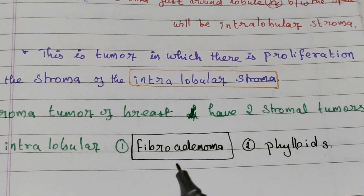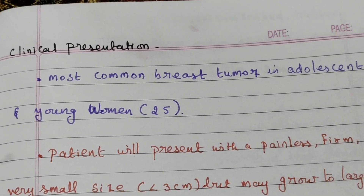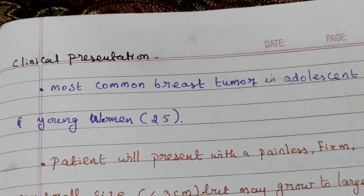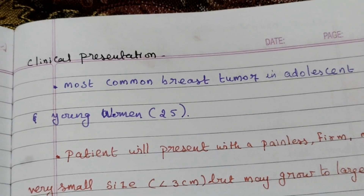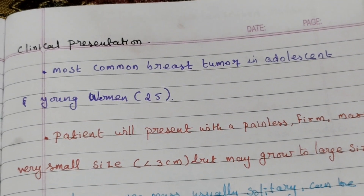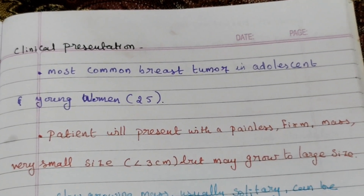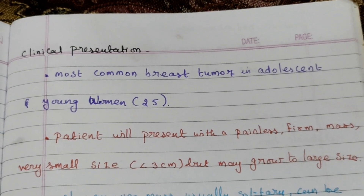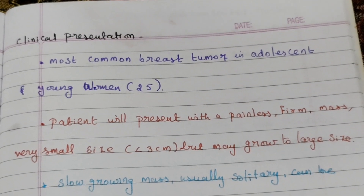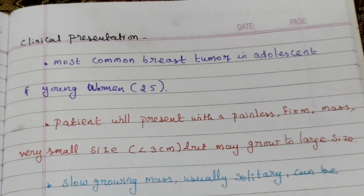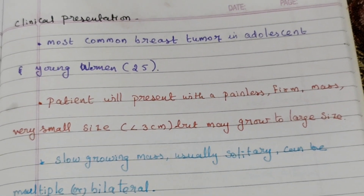Now how does the patient present? This is the most common breast tumor of adolescents and young women, and it is also the most common breast tumor overall. It occurs mostly in adolescent and young women, especially around the age of 20 to 25. The patient will present with a painless mass which is very small in size, mostly less than three centimeters, typically around one to two centimeters, although in some cases it can grow larger.